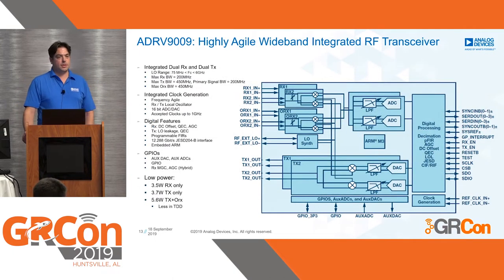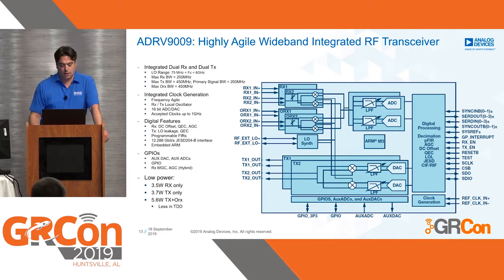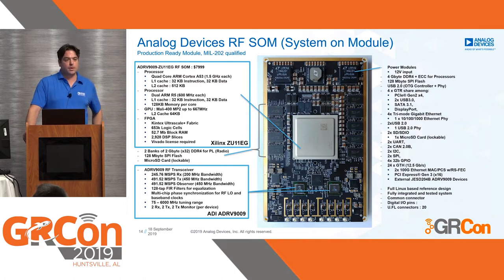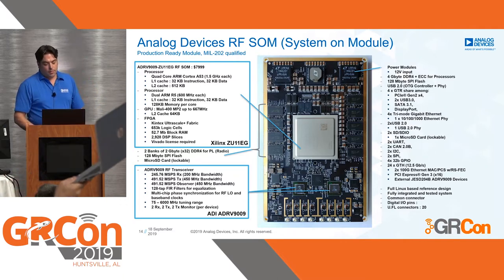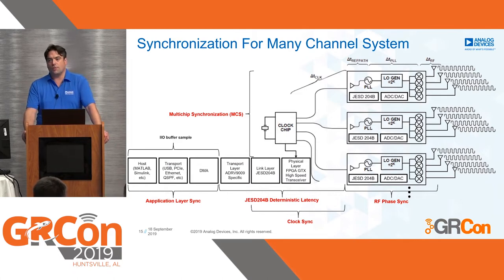The ADRV9009 has been mentioned over the last two days quite a few times. It's a 2RX, 2TX system featuring 200 MHz bandwidth with many additional digital features built into the chip. The multi-channel system I'm talking about today is built on the RF-SOM — basically two of those chips, making it a 4×4 on a PCB, together with a large MPSoC FPGA from Xilinx, multiple banks of DDR4 memory, and complete integrated power.